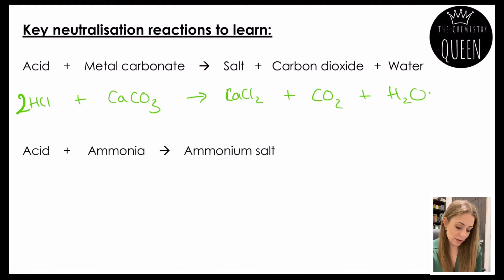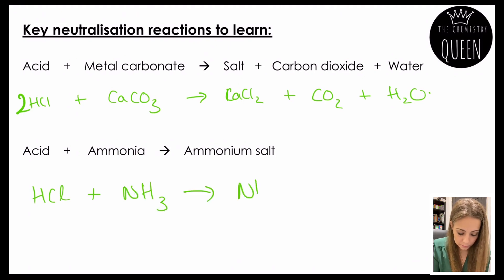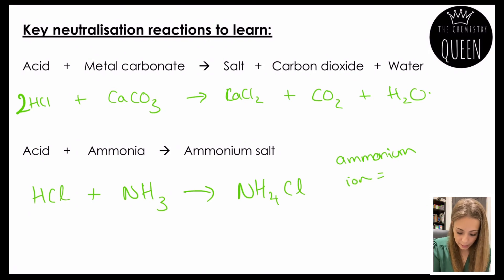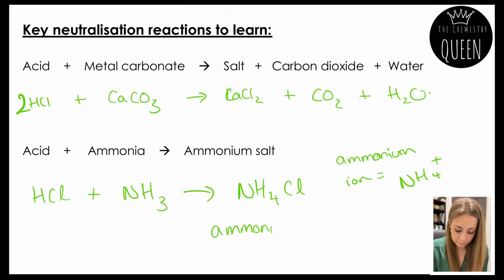The final neutralisation reaction to be aware of is acid plus ammonia, which makes an ammonium salt. In this case there is only one product — hydrochloric acid plus ammonia makes an ammonium salt. The ammonium ion has the formula NH4+, and in this case we form ammonium chloride.